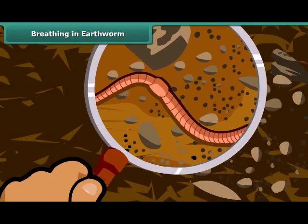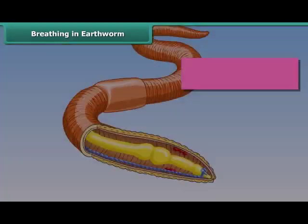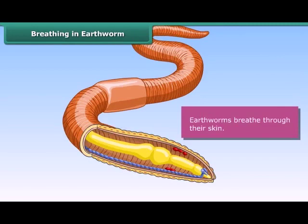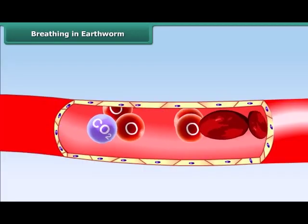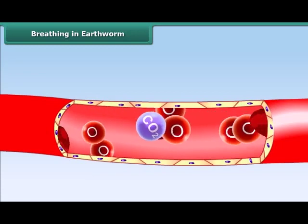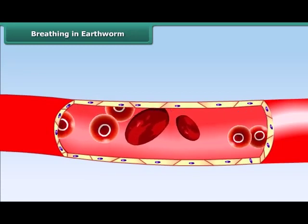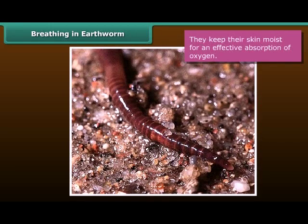Earthworms, like insects, do not have lungs, nor do they have a nose. They breathe through their skin. They absorb oxygen from air and soil when oxygen comes in contact with their moist skin. It is absorbed through tiny blood vessels and circulated throughout the body. The same blood vessels carry carbon dioxide to be expelled through the skin. For effective absorption of oxygen, earthworms keep their skin moist.